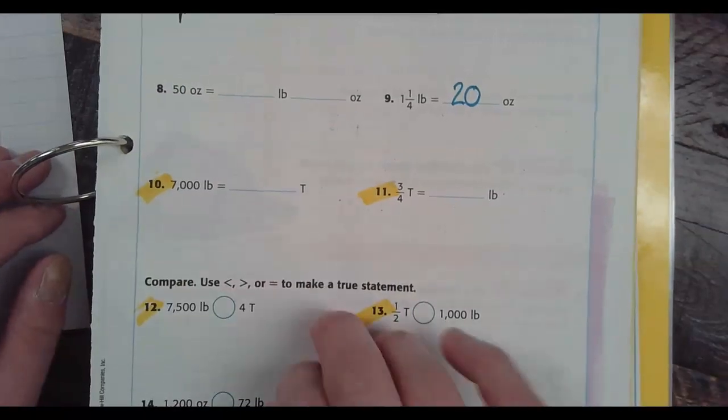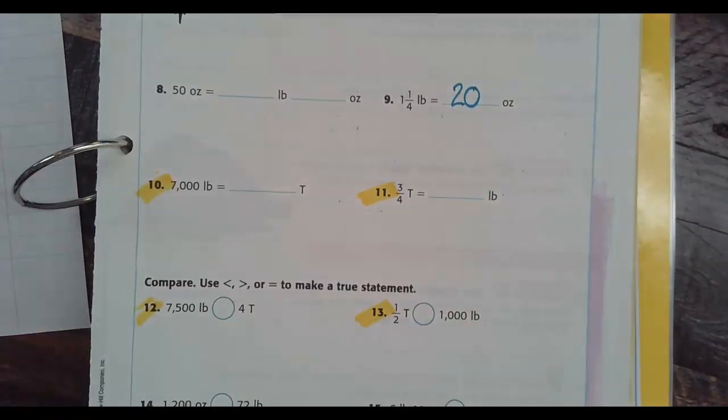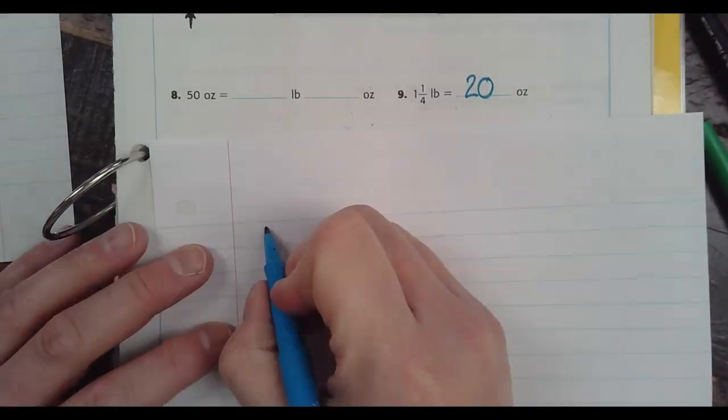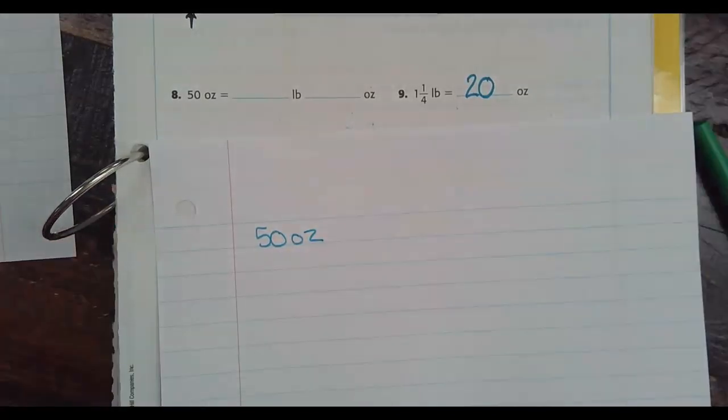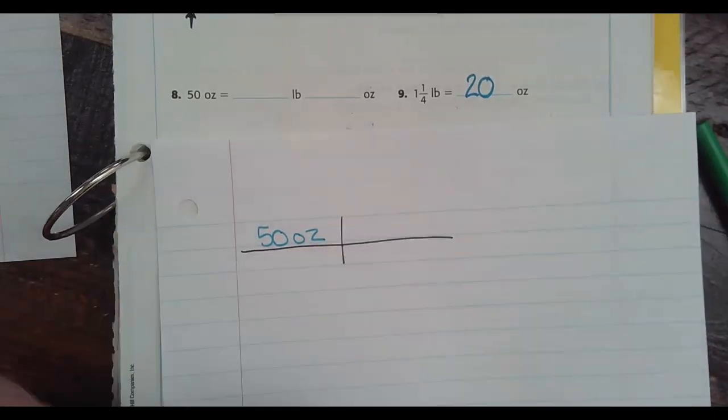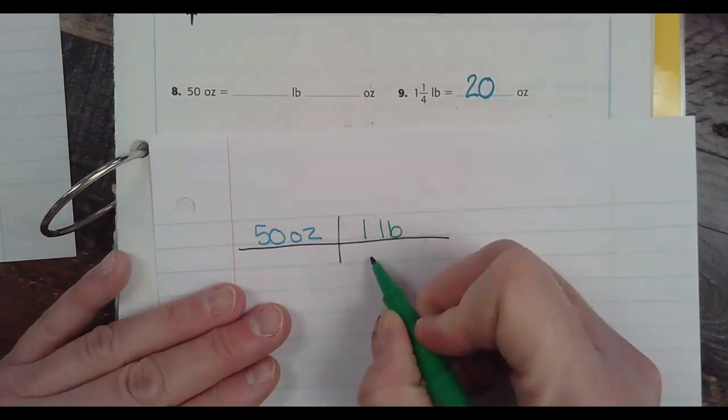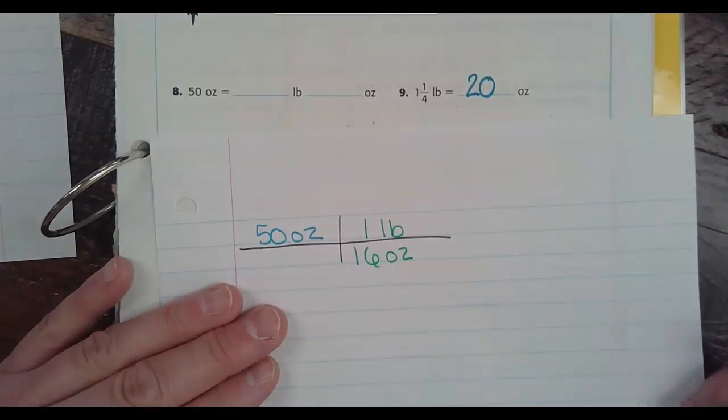Before I go over the four that you are supposed to do, we're going to do number eight together. So number eight says, I have 50 ounces. So is ounces bigger or is pounds bigger? Pounds are bigger, right? So I have number eight, I have 50 ounces, and I'm trying to figure out how many pounds and ounces there are. There is a trick to how you do these. So I'm going to take my ounces to one pound. How many ounces are in a pound? 16 ounces are in one pound. I'm going to put my 50 over one.